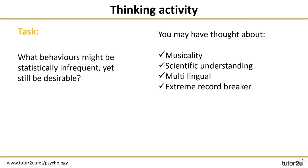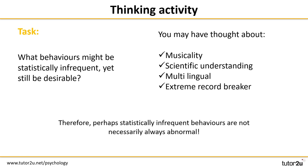Some examples of behaviours that might be statistically infrequent yet still desirable include people gifted with musical abilities, such as Beethoven or Mozart — rare, yet many aspire to their level of musicality. Scientific understanding, as seen with Einstein and Edison, is rare by this definition even though students worldwide strive for such breakthroughs. People who speak several languages, or those who break world records, may also be considered statistically rare. So to summarise, statistically infrequent behaviours are not always abnormal — but for this definition of abnormality, they certainly are.